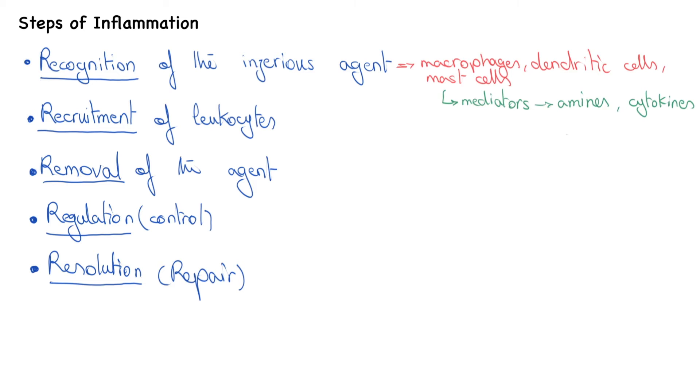If you want to learn more about mediators of inflammation, you can watch my video on that. After having been released locally, mediators of inflammation promote dilation of small vessels, increased permeability of the microvasculature allowing plasma proteins and leukocytes to leave the circulation, and recruitment of leukocytes and their immigration from the circulation to the site of injury.